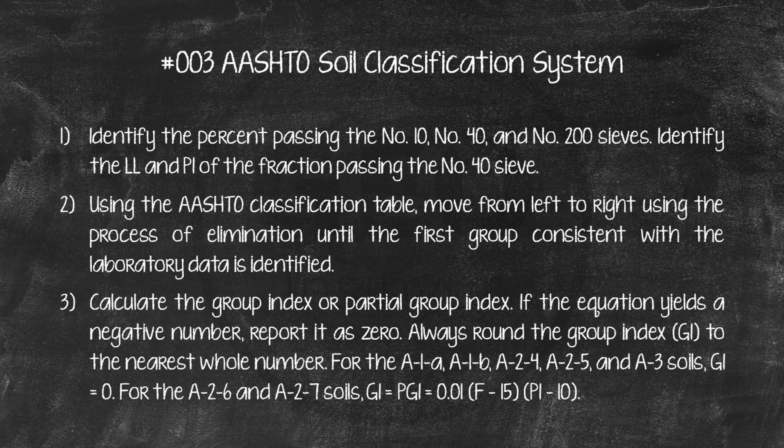For the A1A, A1B, A24, A25, and A3 soils, GI equals 0. For the A26 and A27 soils, GI equals partial GI.